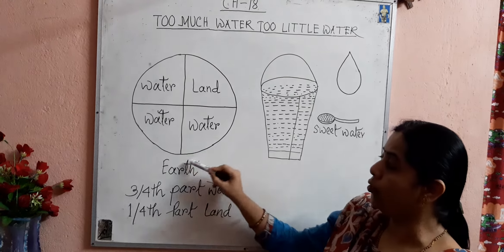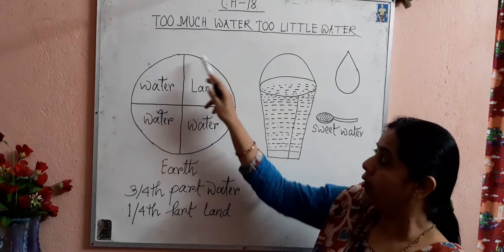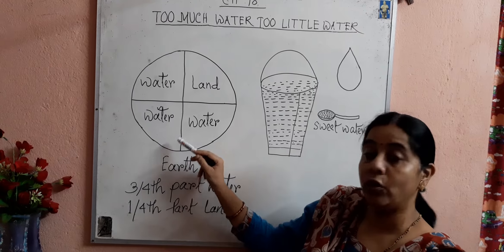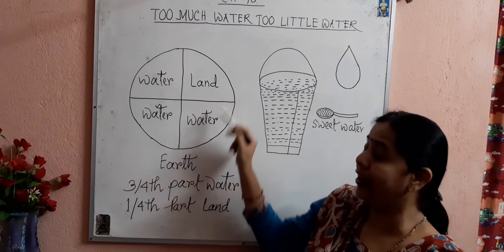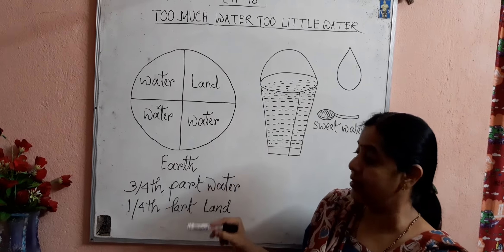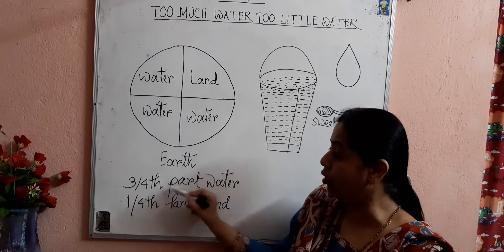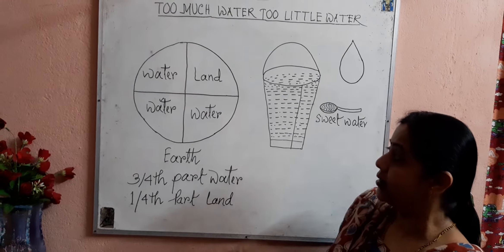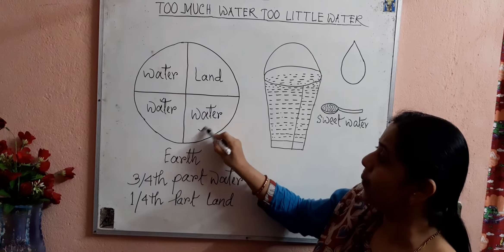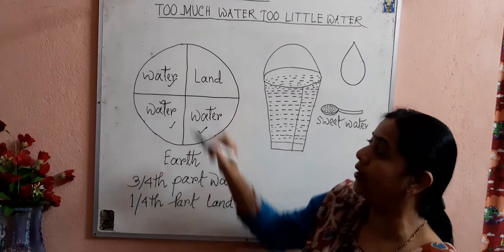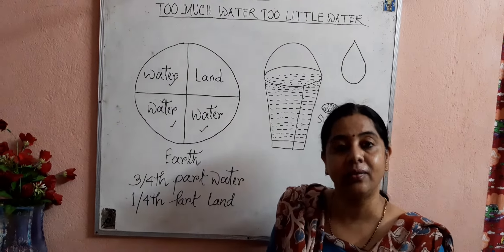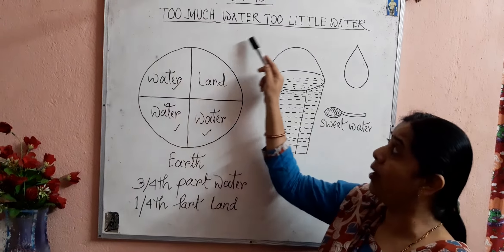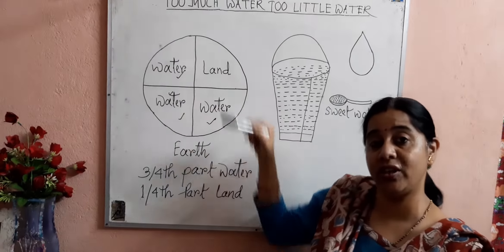Students, as you all know, if you divide the whole earth's surface into four equal parts, then three-fourths of the earth's surface is water. You can see this part, this part, and this part is water. So you can say there is too much water on our earth's surface.